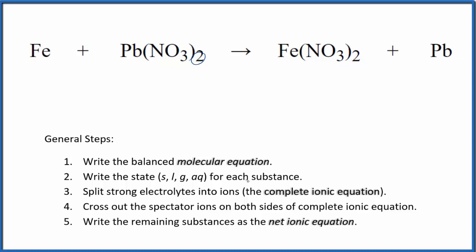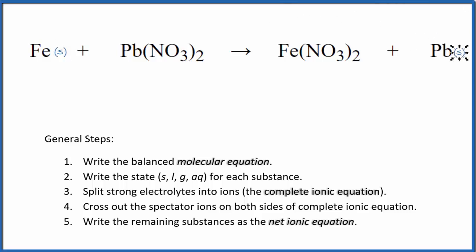Next, we're going to write the state for each substance. Iron is a metal, so we're going to call that a solid. Lead is going to be solid as well. Nitrates are very soluble, so we'll put an AQ after that. They'll be aqueous and will dissociate into their ions.